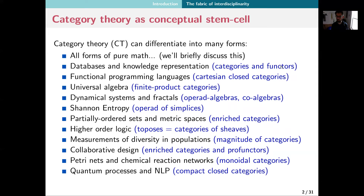In computer science, for example, there are databases and knowledge representation. Categories and functors can be used to talk about those, or about functional programming languages where you look at Cartesian closed categories, dynamical systems, entropy, collaborative design, chemical reaction networks, or quantum processes. In each of these cases, there's some notion from category theory — like compact closed categories — that really explains a huge amount of the Hilbert space formalism. You can learn just the category theory and see it applying to entropy or diversity in populations or whatever.